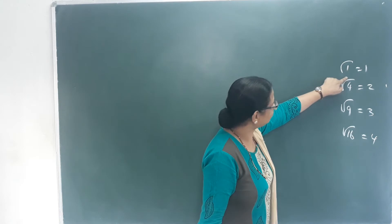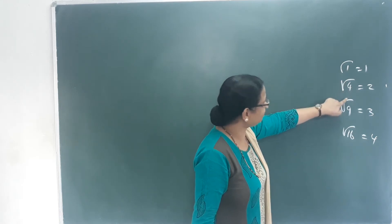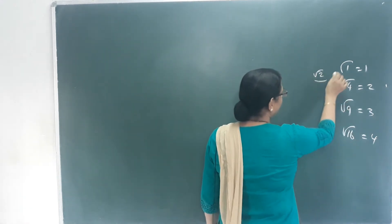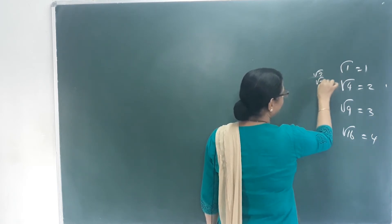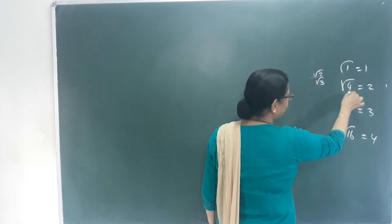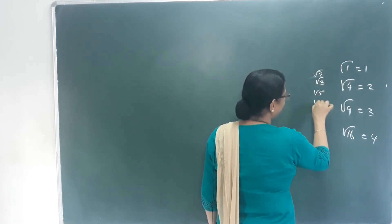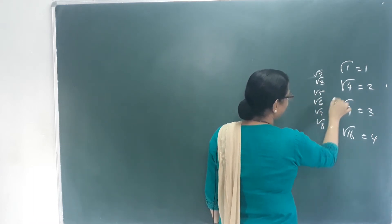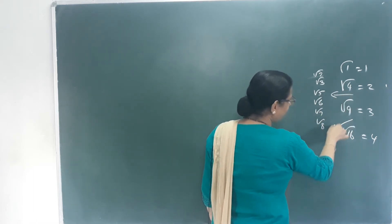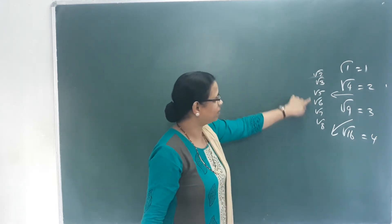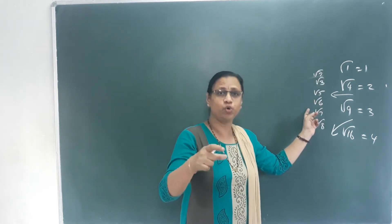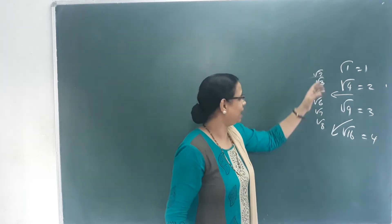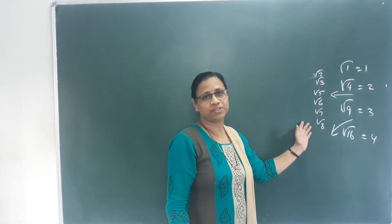Look at this number. This is root 2 and root 3. This is root 5, root 6, root 7, root 8. We call these numbers. This is the new number. We understand the number; we need to be learning the number. Remember, these are irrational numbers.